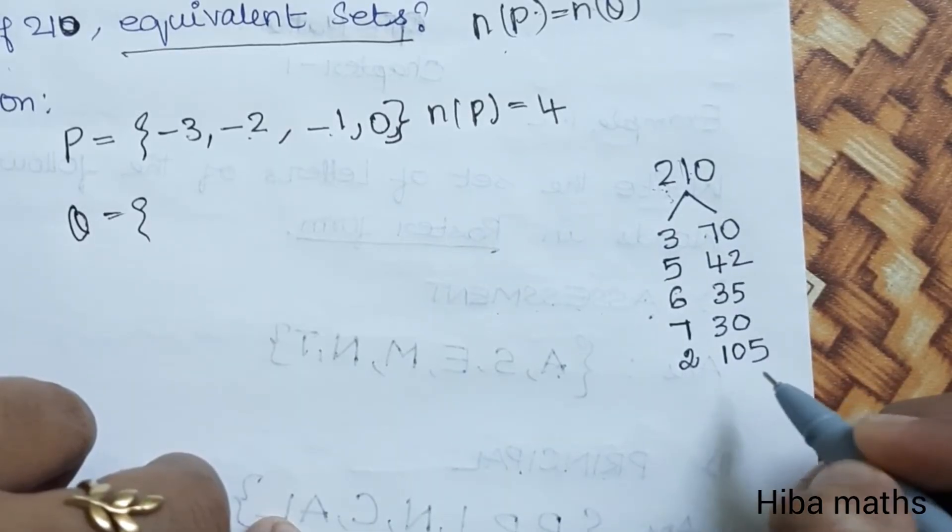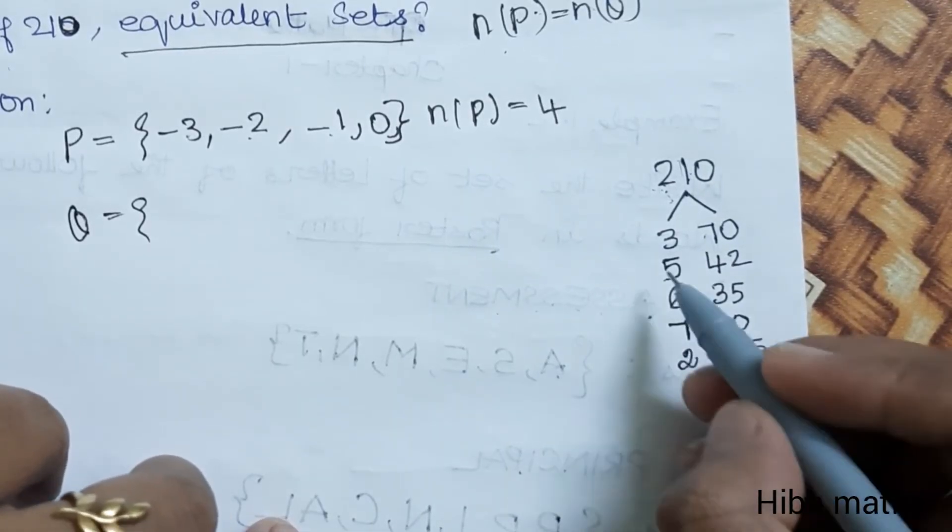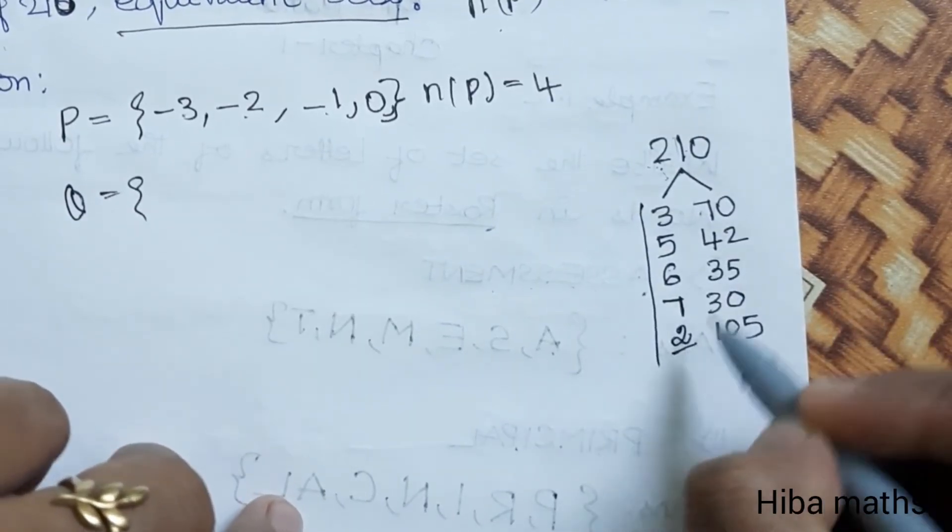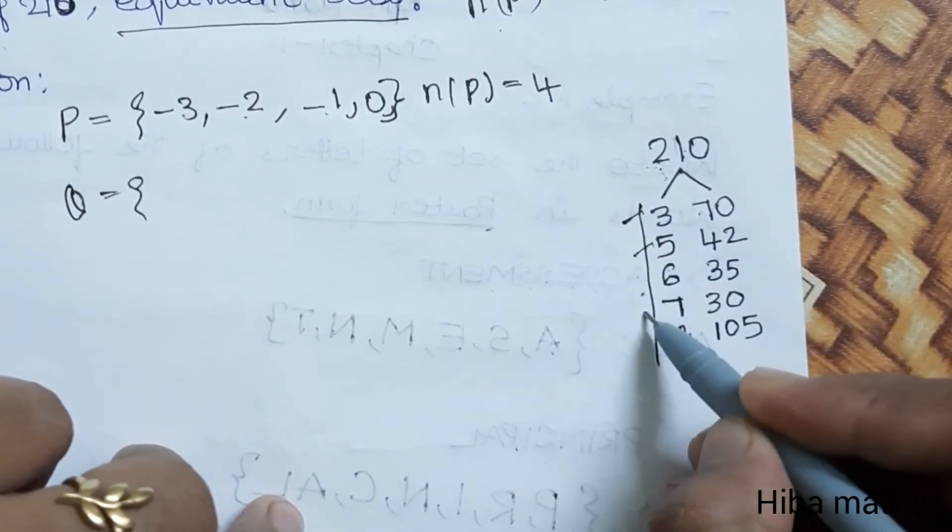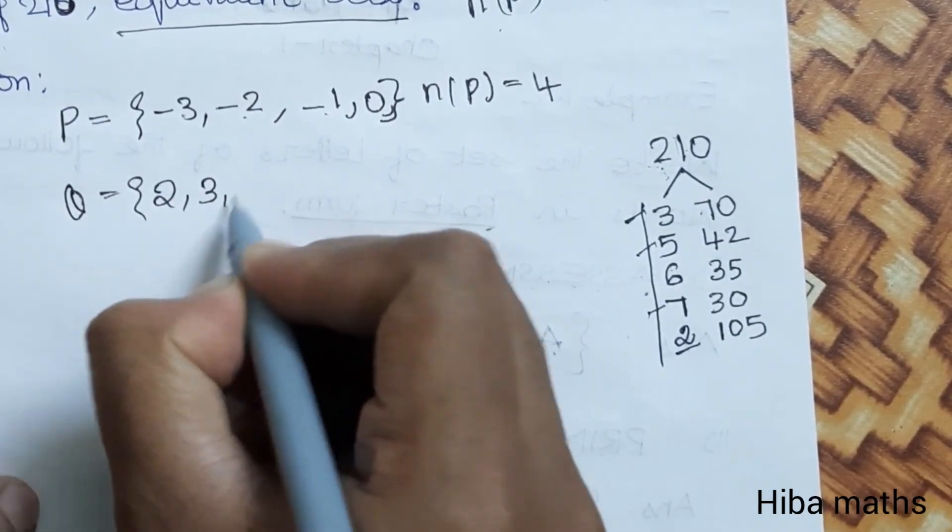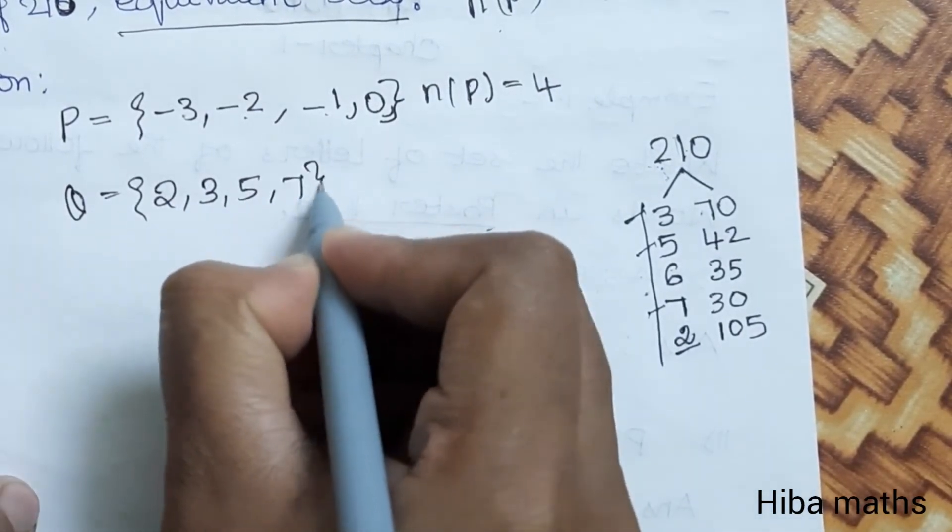The prime factors are 2, 3, 5, 7. So we have 2, 3, 5, 7.